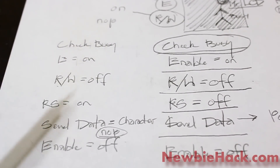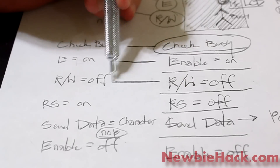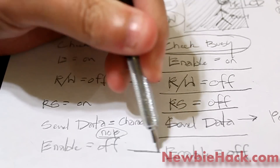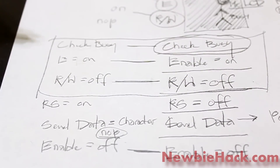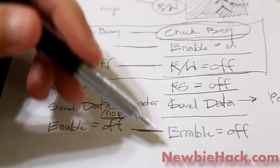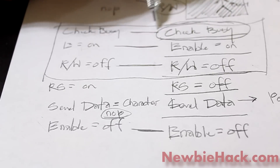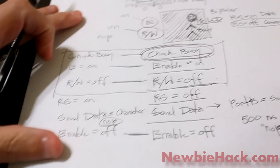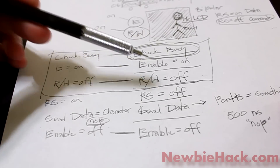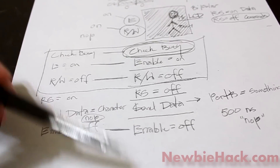You'll notice a lot of commonality between these operations — both sending commands and sending data share the check busy, enable on, and read-write off steps. The only differences are the RS state and the data sent. These common steps can be put into their own subroutine. The check busy can also be its own routine. Generally, when you want to control or display on the LCD, you keep checking busy until it's clear, then process your command.